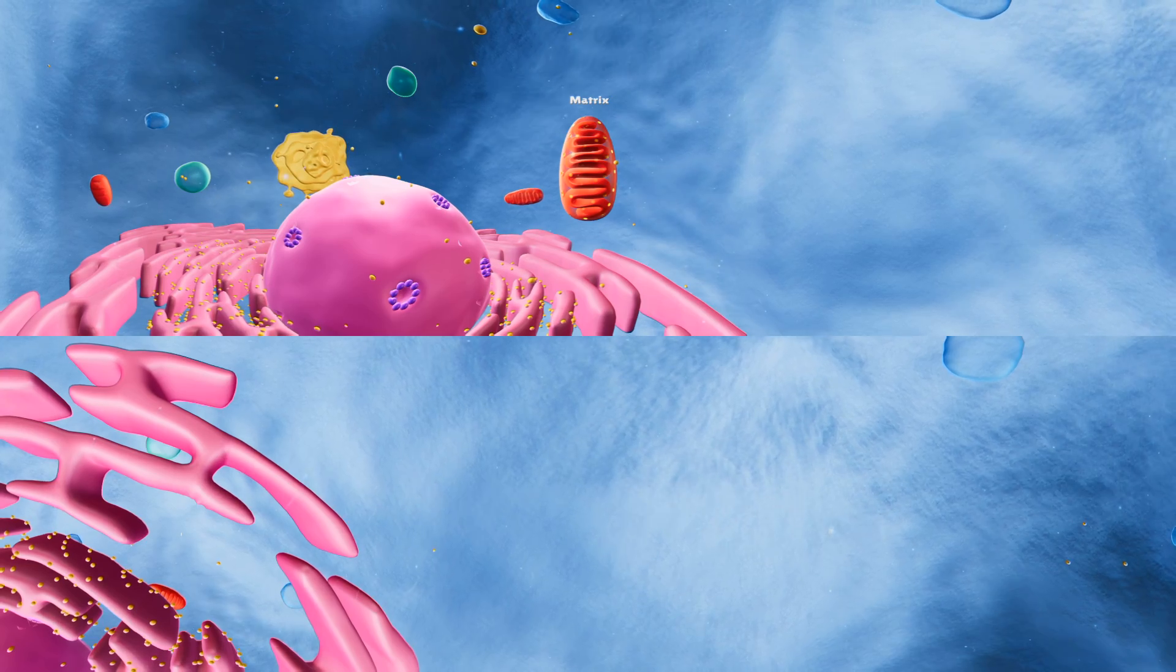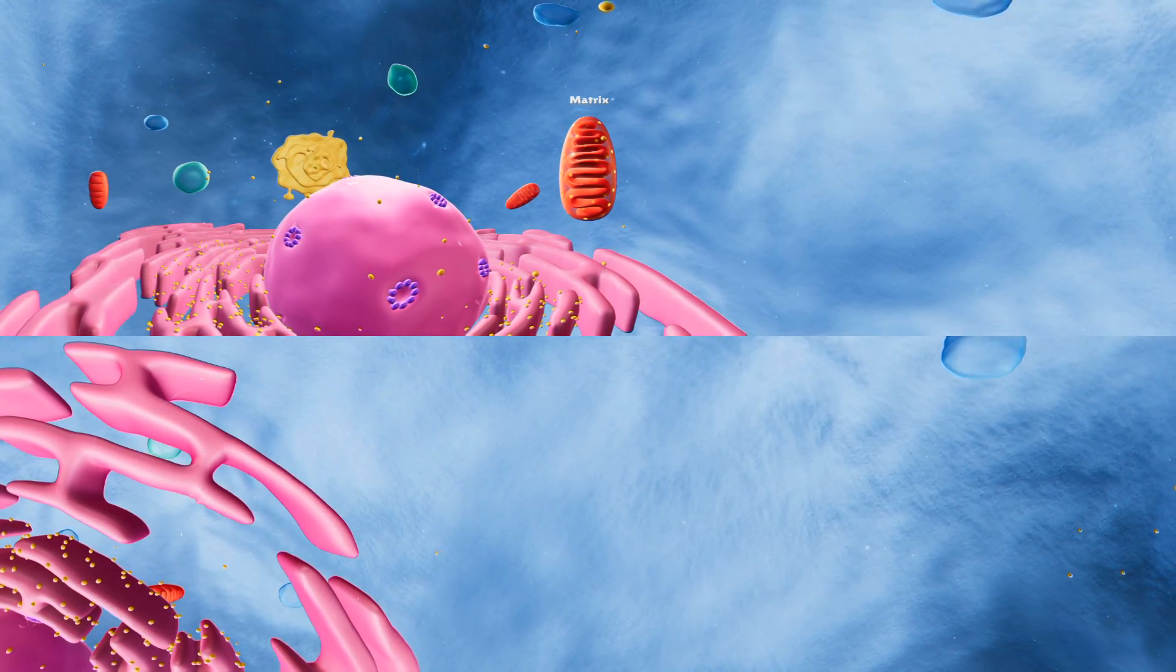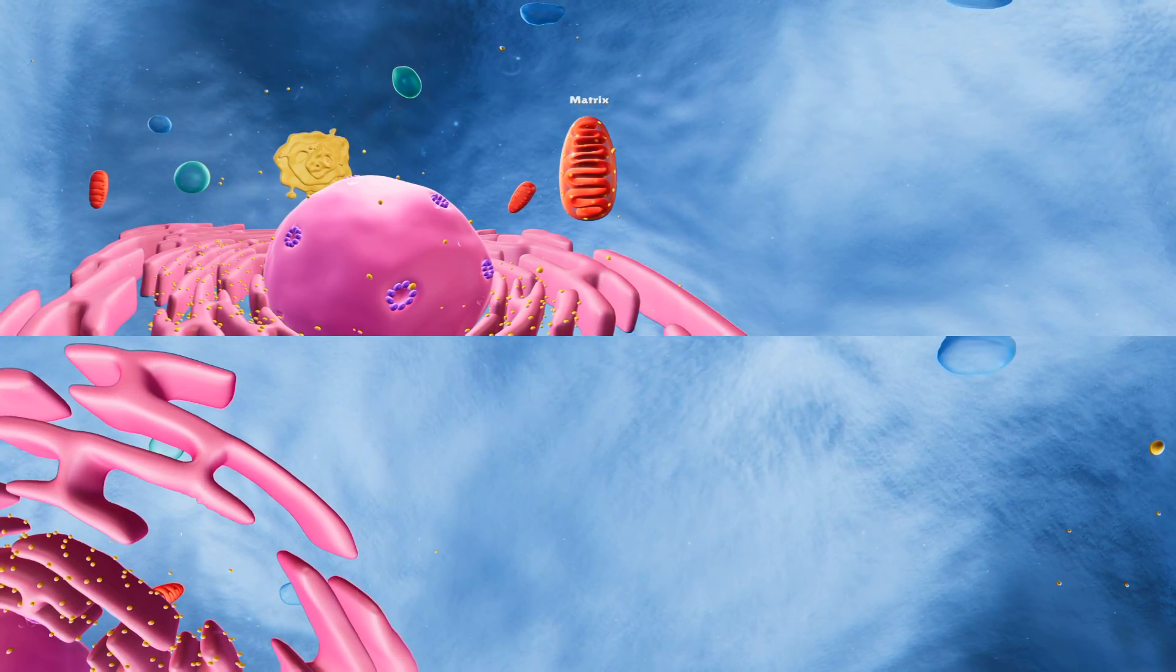Even though we won't be talking about it in this video, here's a fun fact. The nucleus isn't the only organelle with genetic material. The mitochondrion is the only other organelle in the animal cell that has its own DNA and RNA.